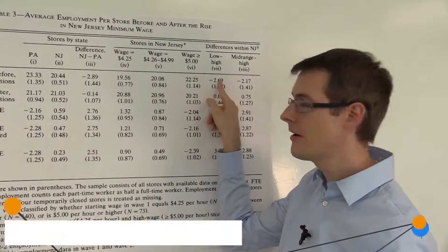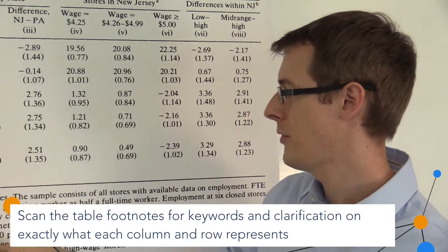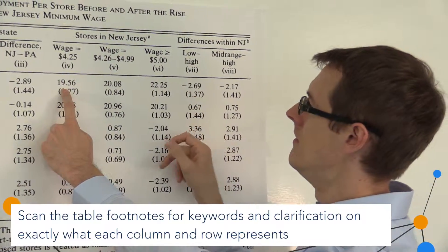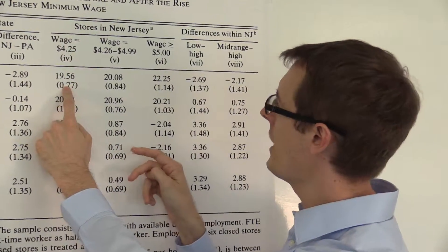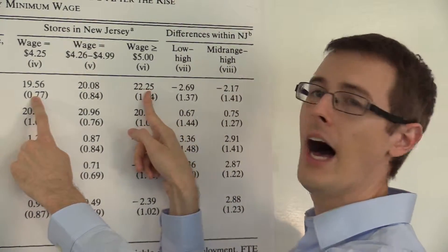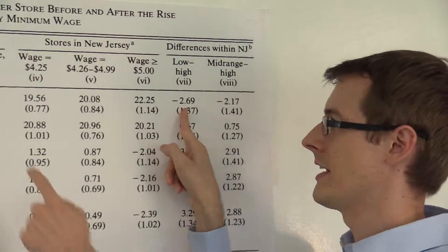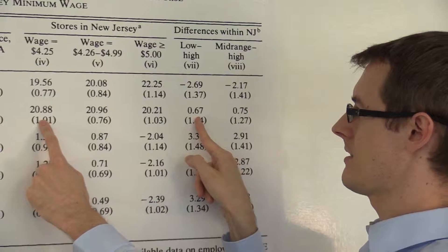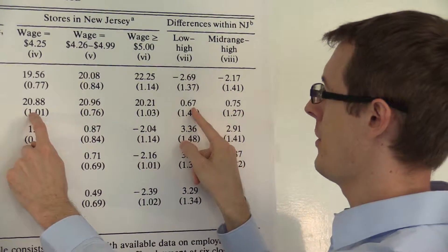So what they do here — this first column, low minus high, that's the first thing. It's the difference in employment between low and high. So they're going to take the employment before in the low wage store and subtract it from the employment in the high wage. You take these differences, you get minus 2.6. And then if you take this difference here, you get 0.6. That's how they're actually computing these numbers.